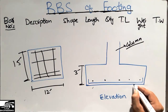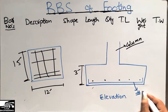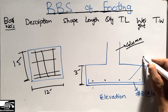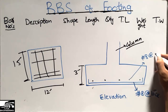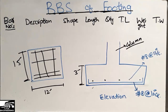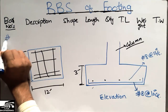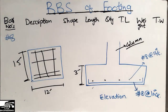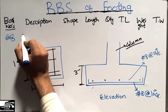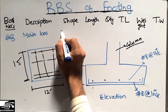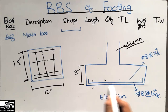Starting with the first entry: the bar number. We are taking number 8 bars as the main reinforcement at a spacing of 10 inches center to center, while the distribution bars are also number 8 bars at 12 inches center to center. The bar number is number 8, used as main reinforcement. The description is 'main bar in footing.' The shape is a double-L shape.